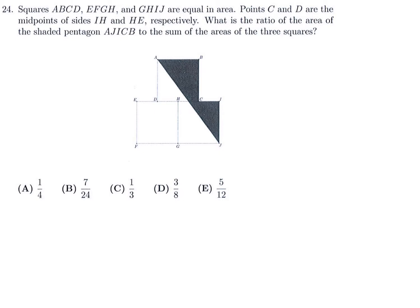Squares A, B, C, D, E, F, G, H, I, J are equal in area. Points C and D are the midpoints of IH and HE respectively. What is the ratio of the area of shaded pentagon AJICB to the sum of the areas of the three squares? Let's make life easy by giving each square dimensions one by one, so each has area one and the total area of three squares is three. We need to find the area of that shaded region.